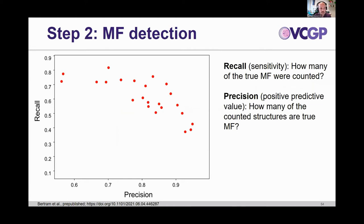This variability differs between pathologists. Precision is how many of the counted mitotic figures are true mitotic figures, whereas recall is how many of the true mitotic figures were counted. One pathologist had very high sensitivity but rather low precision, whereas others had very high precision and rather low recall. We tend to have different trade-offs between precision and recall as pathologists, and this will influence whether we count or don't count a given mitotic figure, obviously affecting the mitotic count.